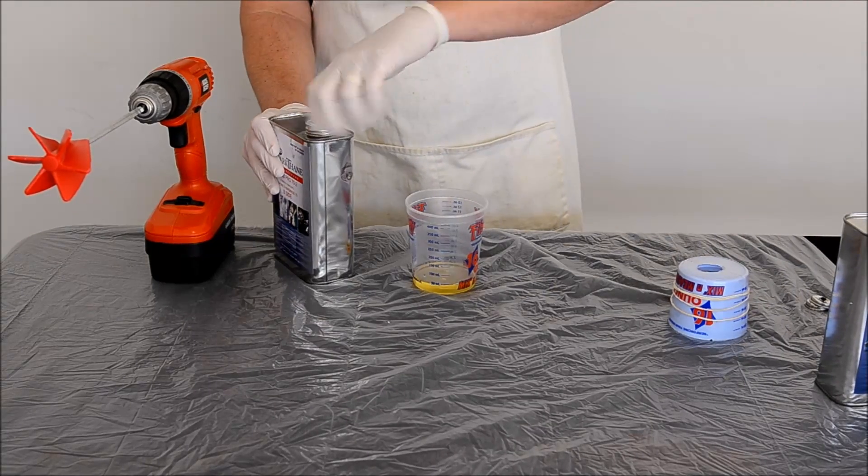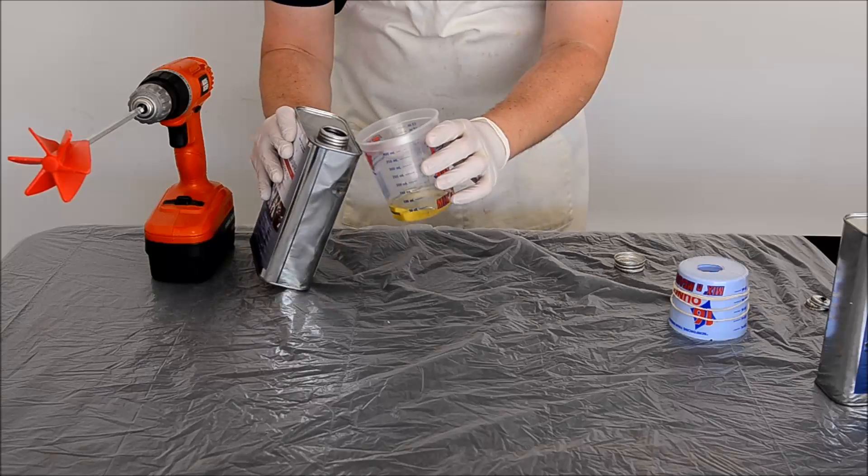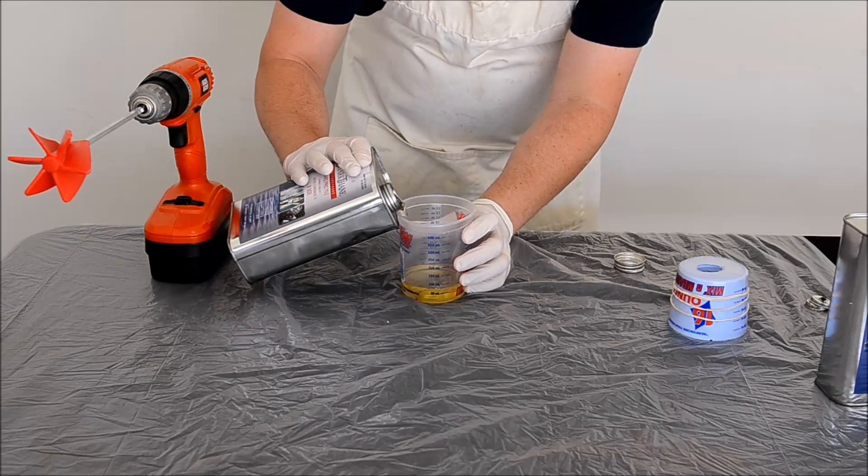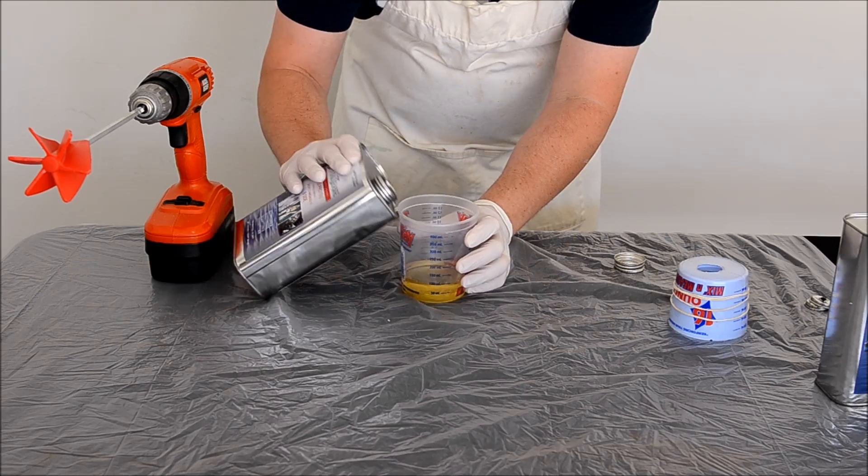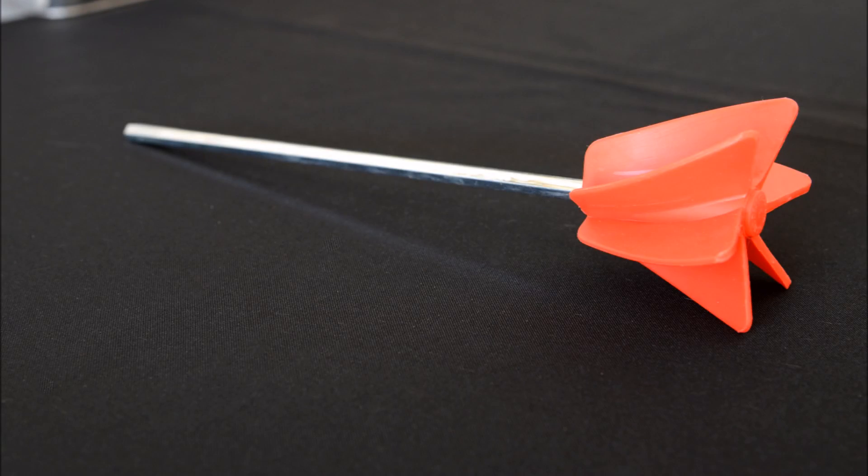We measured out 50 milliliters of Part A and then added in 50 milliliters of Part B. We will use a paint mixer which was purchased at Home Depot to speed up the mixing time. Do not use with more viscous polyurethanes as it will introduce air bubbles into the polyurethane.